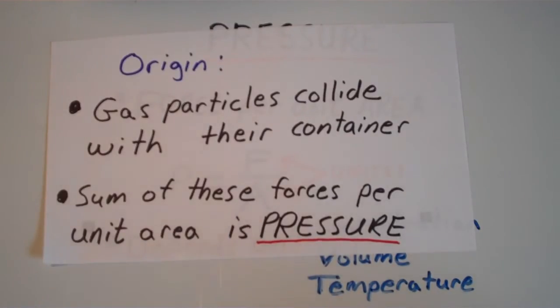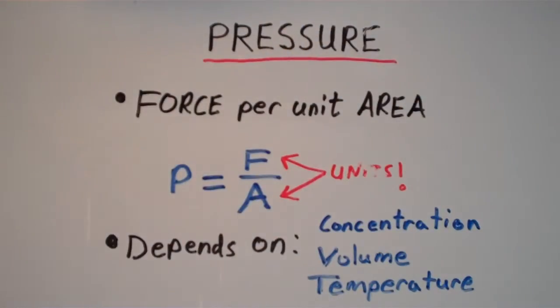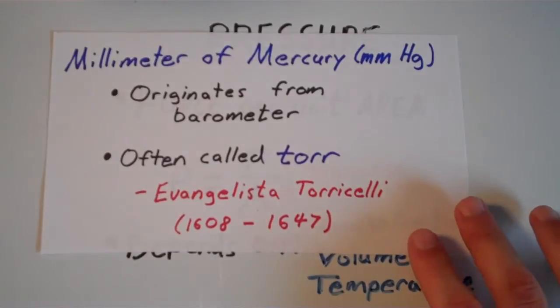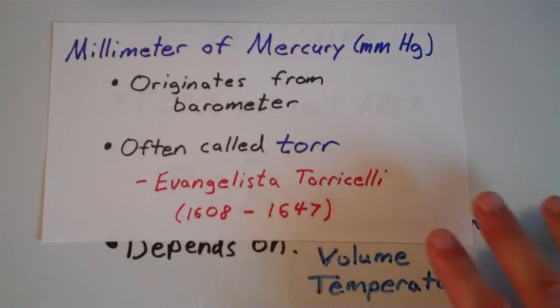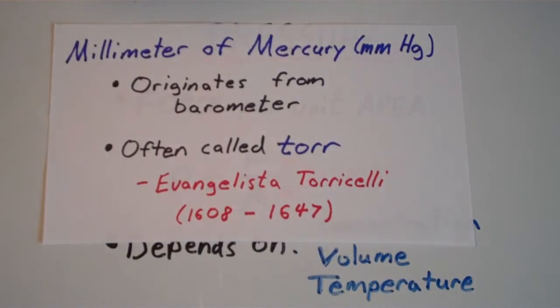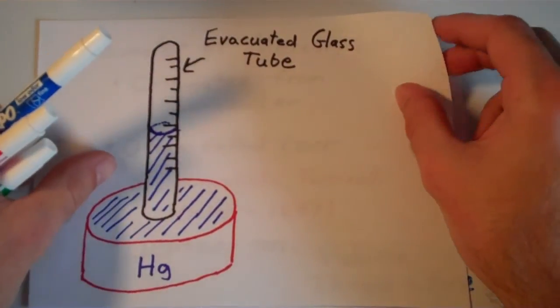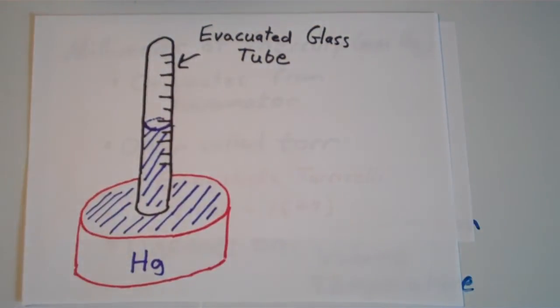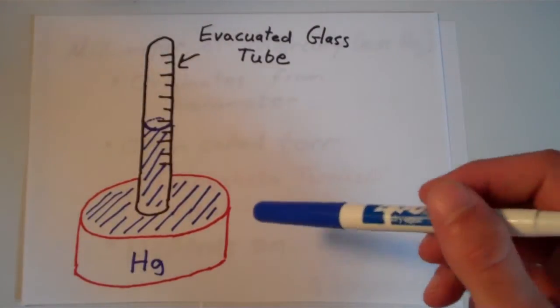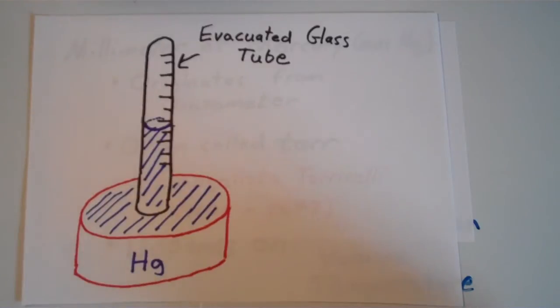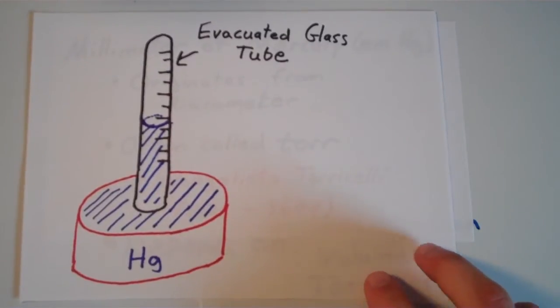So now let's talk about some of the units, the common units of pressure. So the first unit of pressure that I want to talk about is the millimeter of mercury or MMHG. And the millimeter of mercury, this unit originates from a barometer. So you kind of have to know how a barometer works in order to understand millimeters of mercury. So here I have a diagram of a barometer. And basically what a barometer is, it's an upside down evacuated glass tube. So evacuated meaning it's in a vacuum, the pressure has been sucked out of it. It's an evacuated glass tube that is suspended in a pool of mercury or some other dense metal. Mercury works well because it's liquid at room temperature.